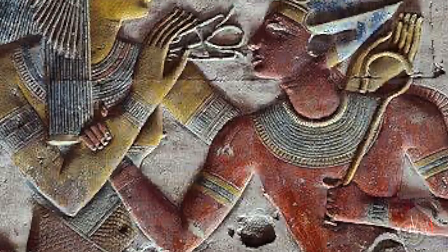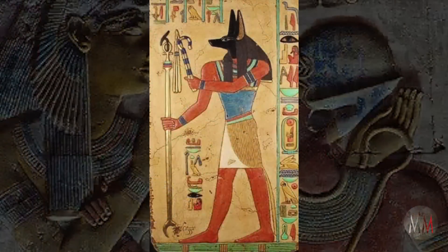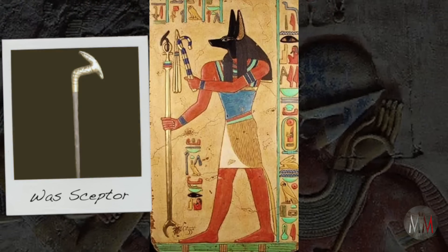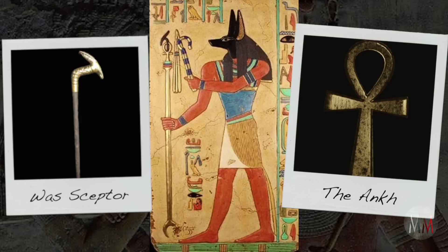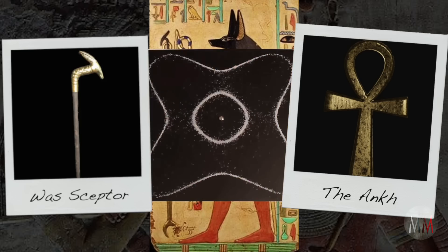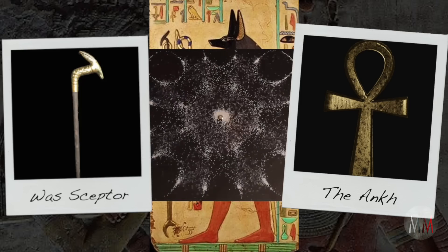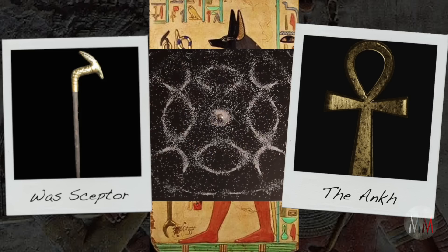The netter interacts with the person through particular forms held in the hand. We have here the waz scepter and the ankh. These things are interpreted today by Egyptologists as being abstract symbols — so that the ankh represents life, for example — but there's much more to it. These things are actually geometric energy emitters: the shapes represented actually were forms that emitted specific vibrational powers.